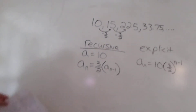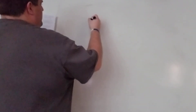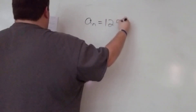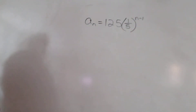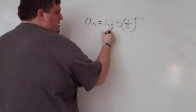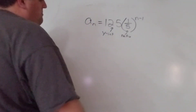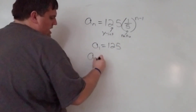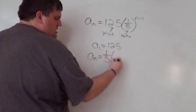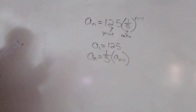Number sixteen: they gave the explicit form and we had to write the recursive. The initial value is a-sub-one equals 125, and the common ratio comes from the explicit form. So the recursive formula is: a-sub-one equals 125, and a-sub-n equals the ratio times a-sub-(n minus one).